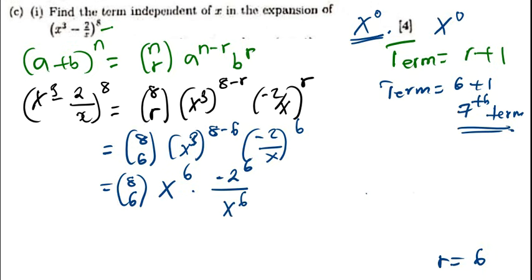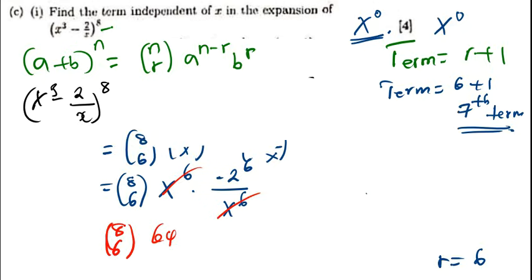Now look at this — we are dividing. So this x to the power 6 and x to the power 6 can cancel. And indeed, this is a term that doesn't have x. So negative 2 raised to the power 6 is 64 — it's going to be positive 64. So what we have now is 8 choose 6, times 64.